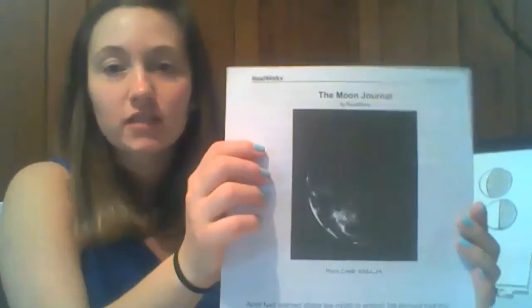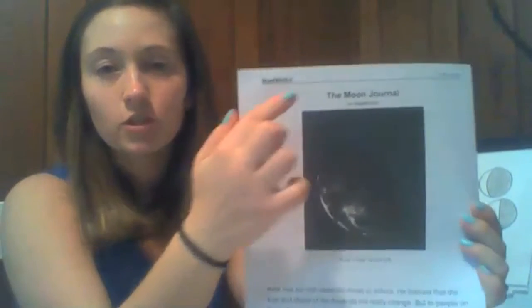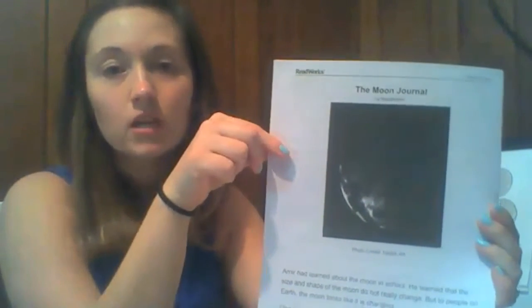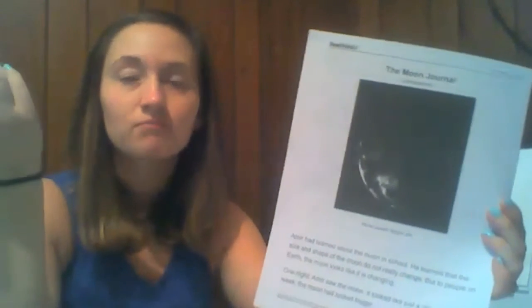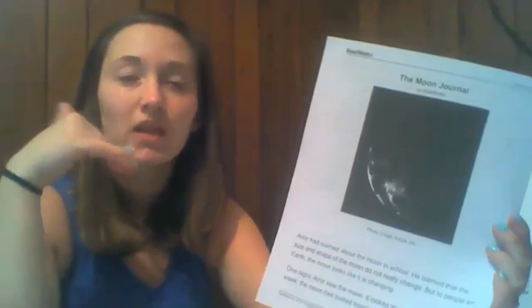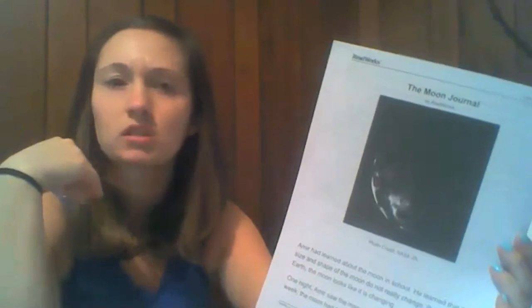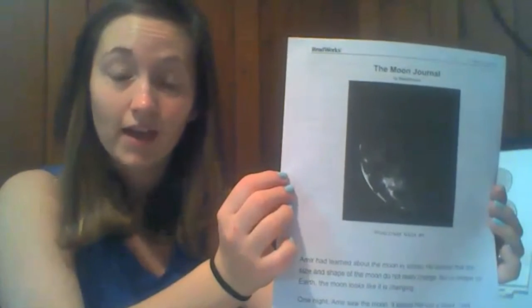I'm going to go ahead and start. It's kind of hard to see because of the picture, but there's our title — the moon journal. So if we're thinking and predicting about the moon, we kind of know what a journal is, right? Like you write in a journal. So maybe he's going to be doing some writing or drawing or putting some thoughts down about the moon. You can kind of see the outline of the moon — one side a little more than the other. The rest looks black.